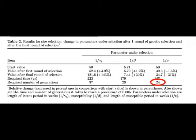Table 2 presents the results and the number of generations required for BJD prevalence to reach 0.005 through sire selection. It can be seen that 24 generations are required for susceptibility to reduce.